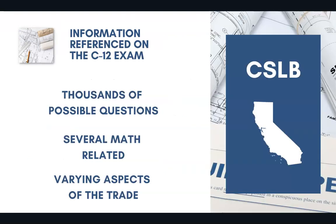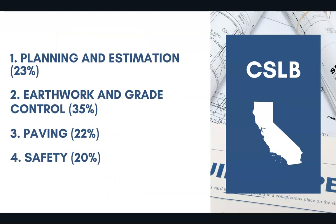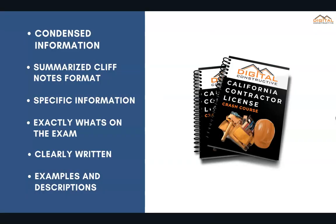It's really important to understand that there are thousands of possible questions on this exam. They rotate thousands of questions so the exam is never the same. Many of them are math related and cover varying aspects of the trade. You can expect 23% covering planning and estimation, 35% covering earthwork and grade control, 22% covering paving, and another 20% covering safety.